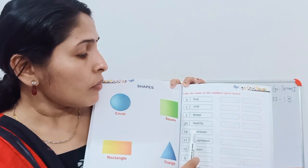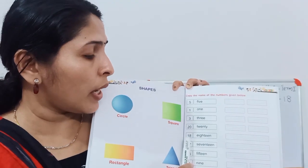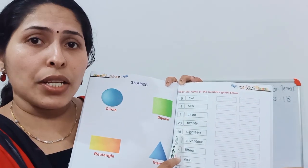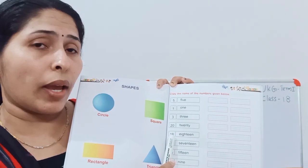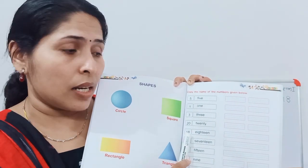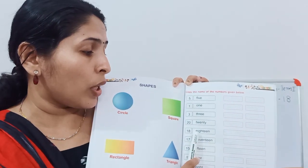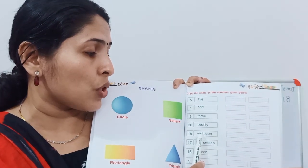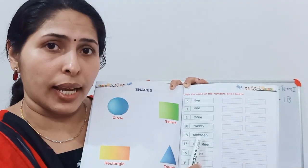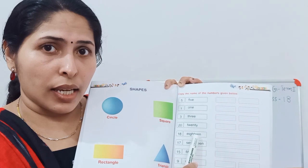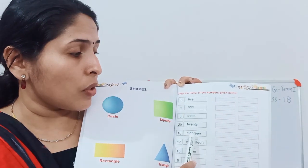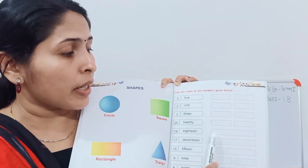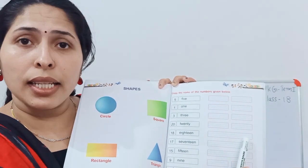Next one is 18. E.I.G.H.T.E.E.N. 18. The spelling of 18 is E.I.G.H.T.E.E.N.